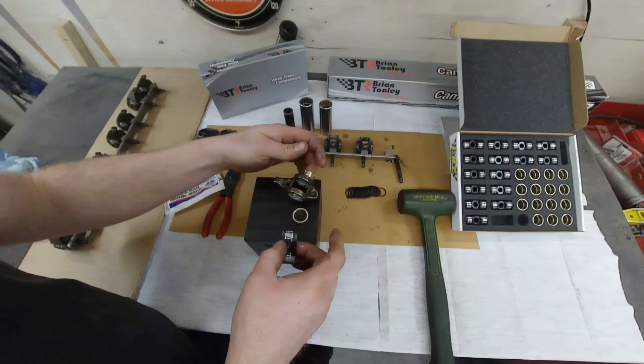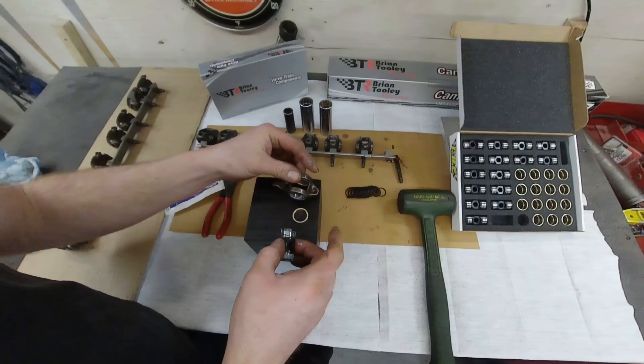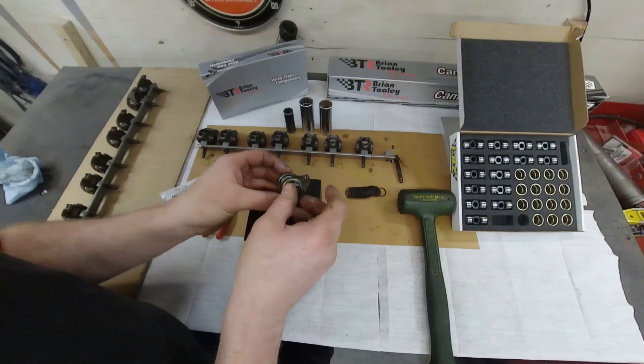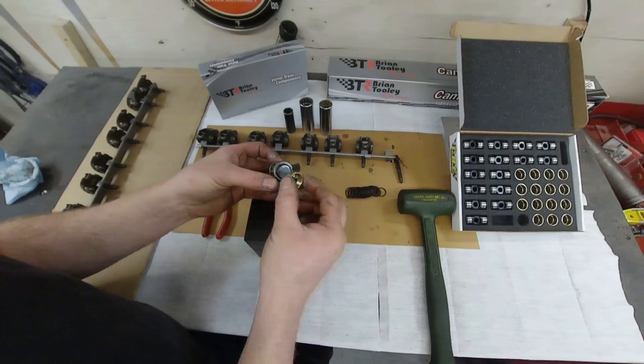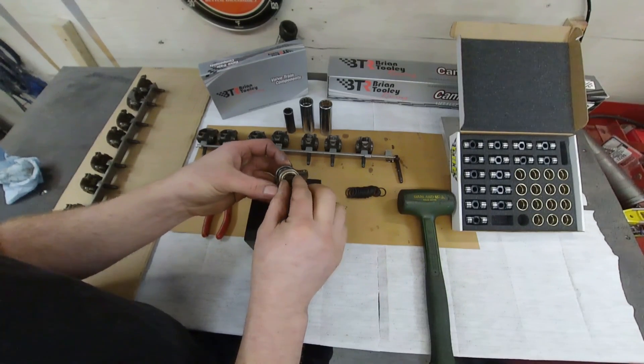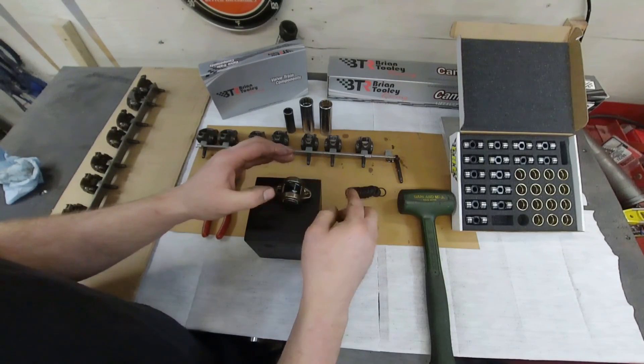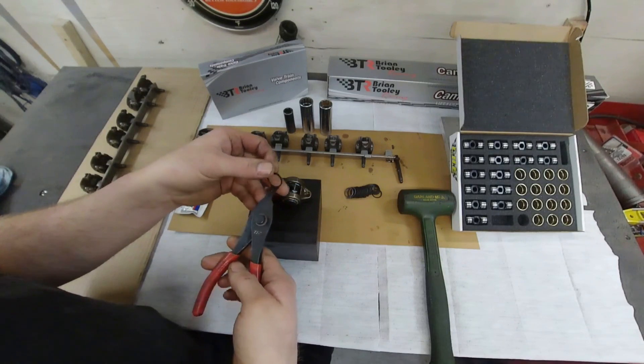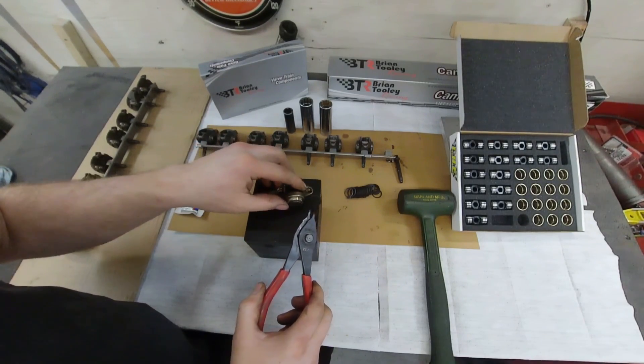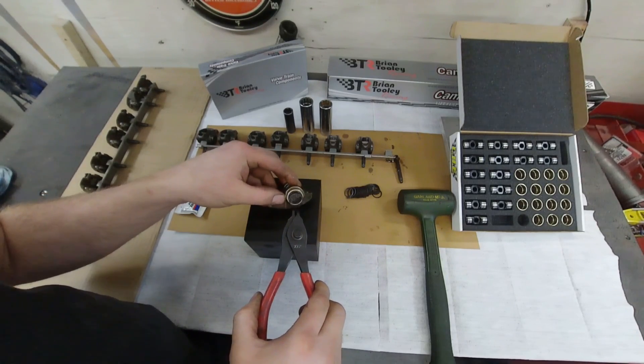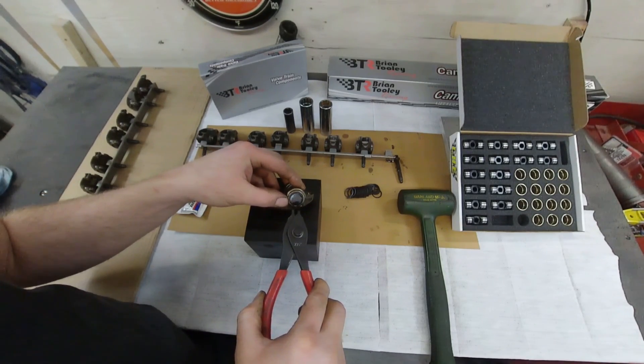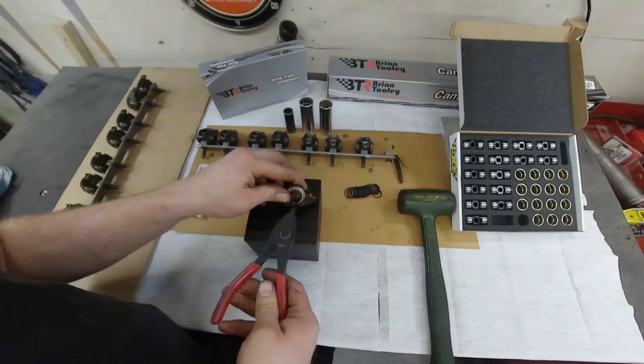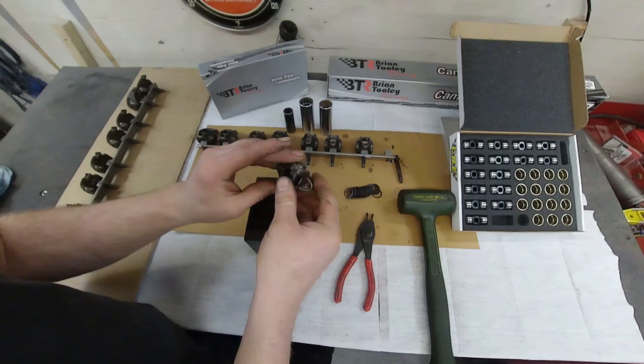We are going to slide into one side here. We are going to take this guy and we are going to slide it into the other side there. Then this final one on like that. Now we need to take the snap ring pliers. Take said snap ring.